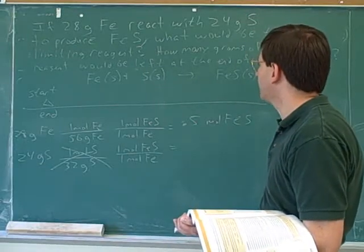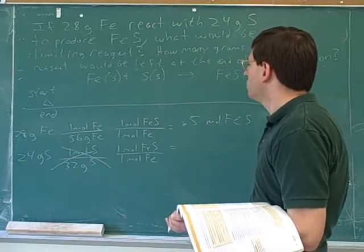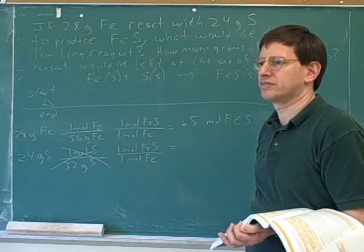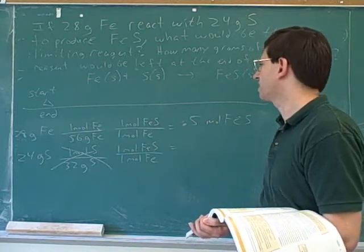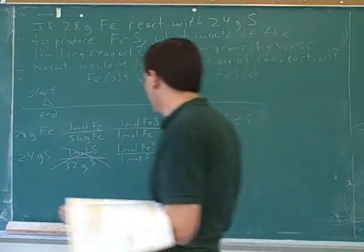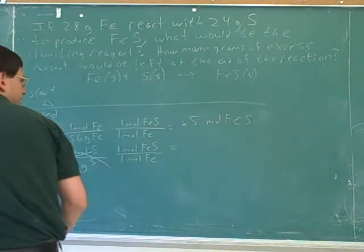Now we have to figure out how many grams of excess reagent would be left. So who is the excess reagent here? Sulfur. The sulfur. So now we have to convert into sulfur. And I think you set up a good conversion for that.